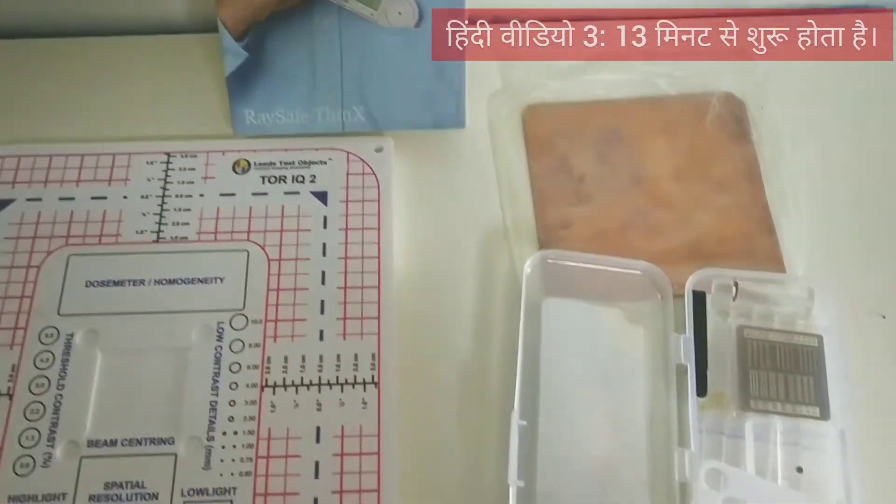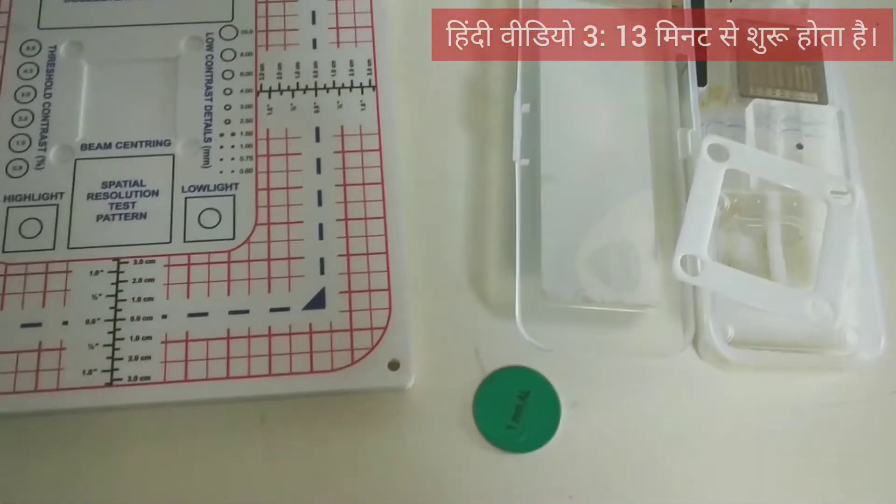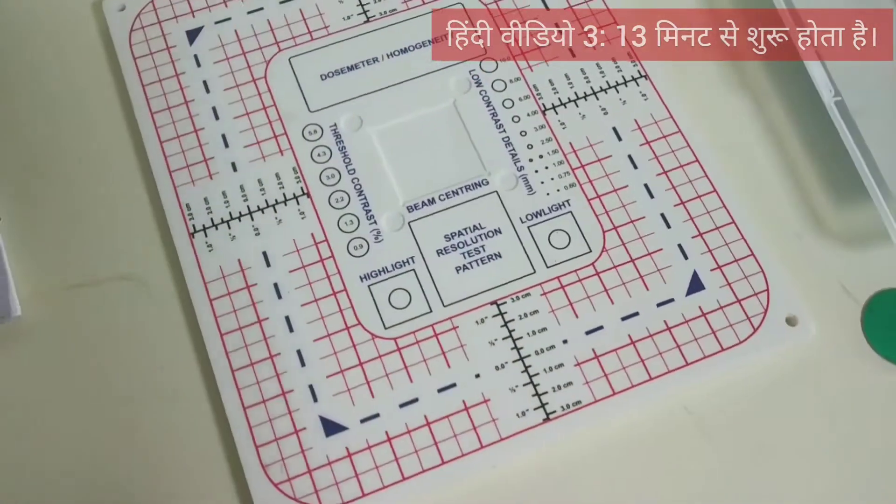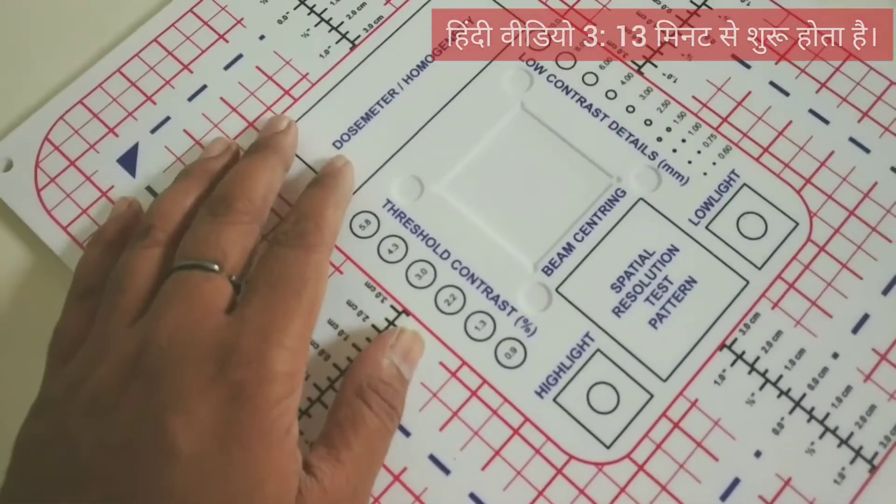In this video, we will be seeing the things required for calibration checking of X-ray. This is a penetration kit. It is used for checking how much dose is reaching the plate.